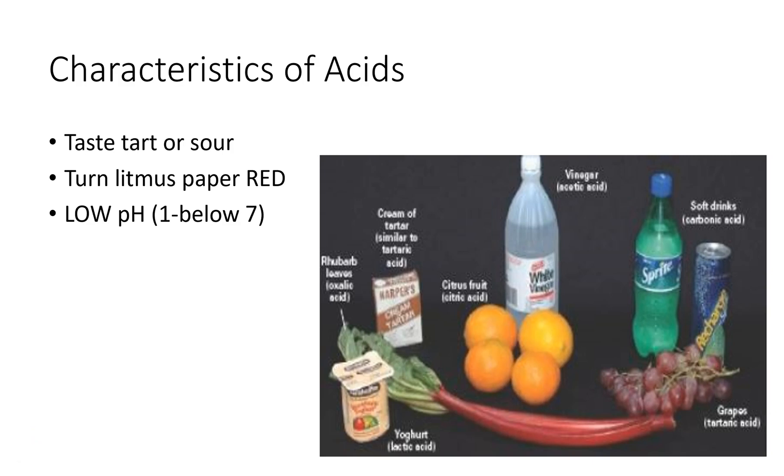First off, characteristics of acids. Acids are going to taste tart or sour, so think like citrus fruit as you can see in the picture that's here to the right. Acids are also going to turn litmus paper red, and acids characteristically have a low pH, so it's going to be anywhere from a pH of 1 to below 7. Over here in our picture are just some regular everyday acids that you might come into contact with on a daily basis, like soft drinks made up with carbonic acid, grapes with tartaric acid, citrus fruits, white vinegar, cream of tartar, rhubarb leaves, yogurt has lactic acid in it.